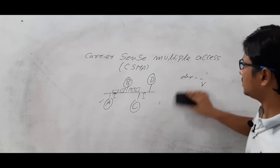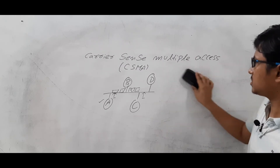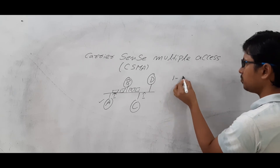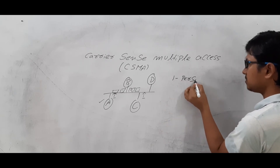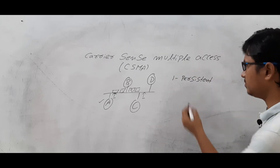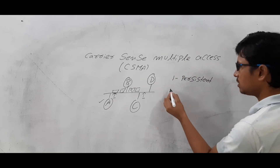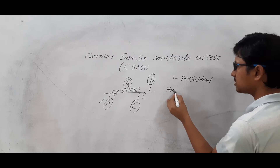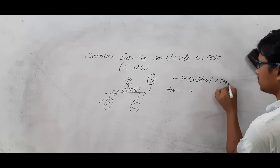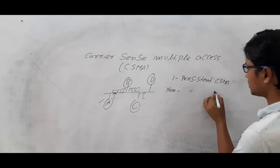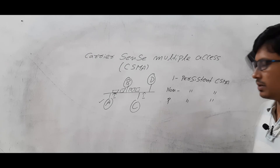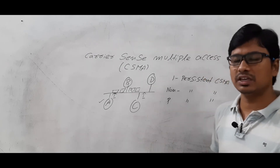We have three persistent mechanisms in CSMA. These are three variations: one persistent CSMA, non-persistent CSMA, and P-persistent CSMA. Let me discuss about these three variations.